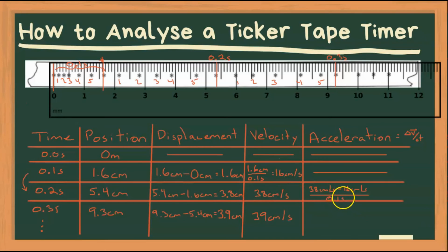When we do that, we get an acceleration of 220 centimeters per second squared. We can do the same thing here: 39 minus 38 is just 1. 1 centimeters per second divided by 0.1 seconds, we get a value of 10 centimeters per second squared.